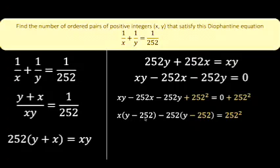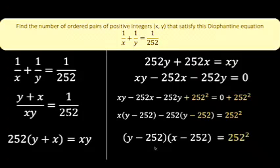Then notice again that there is y minus 252 that's common, and factoring that out, here is the result. That is the reason why we add 252 squared to both sides, so that we'll be able to rewrite that in a clean factored form like this.